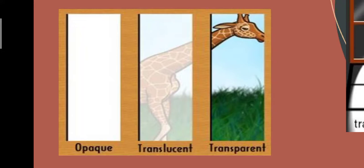Opaque materials are those which do not allow light to pass through them. Moving ahead, translucent materials allow light rays to pass through only a little bit, and these objects are called translucent objects.